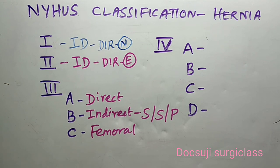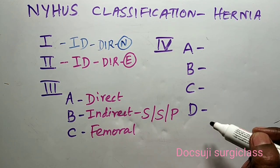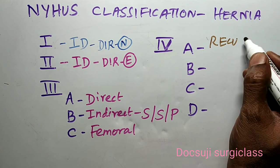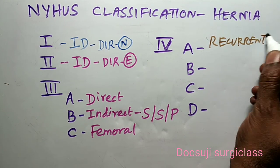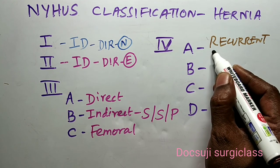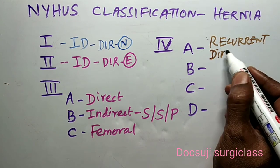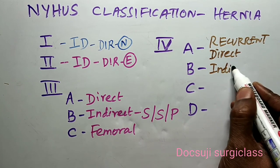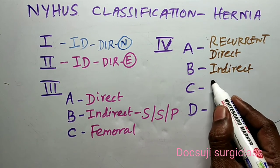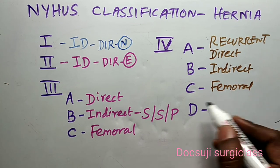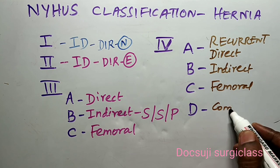Type 4 also has subtypes: A, B, C, and D. As a whole, Type 4 represents recurrent hernia. Type 4A is recurrent direct hernia. Type 4B is recurrent indirect hernia. Type 4C is femoral hernia. And Type 4D is combined.